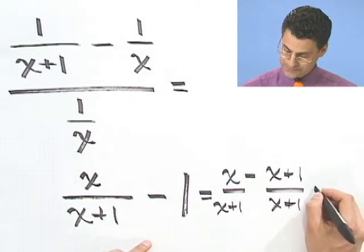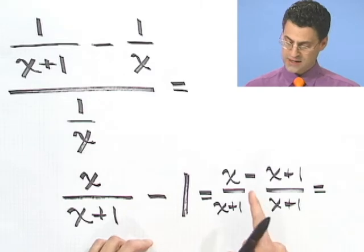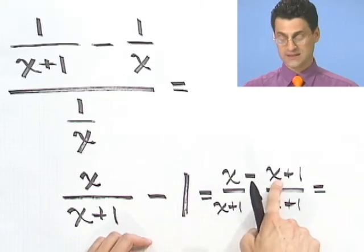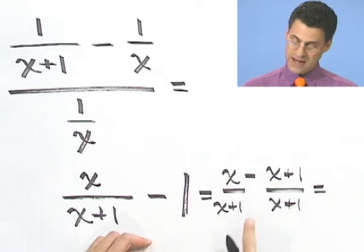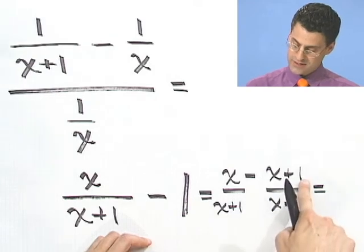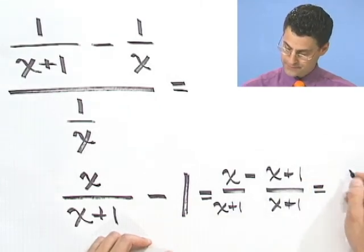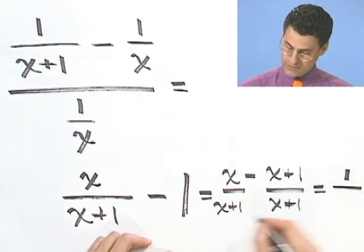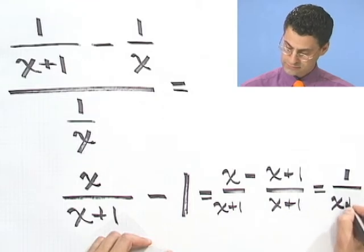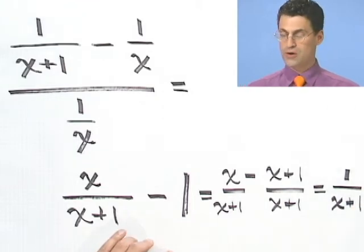If I subtract, what would it look like? I see an x minus x. That's 0. And then it looks like I have just that 1 there all over the common bottom. So 1 over x plus 1.